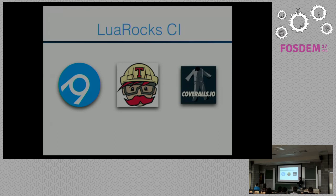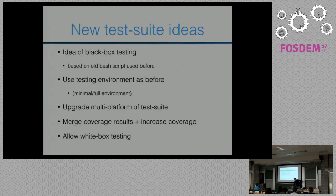Just as a reminder: continuous integration ran on Travis, giving us results for GitHub to help with merging pull requests. But there was information scattered from everywhere, and the bash script had so many issues. Coverage was on the Coveralls service.